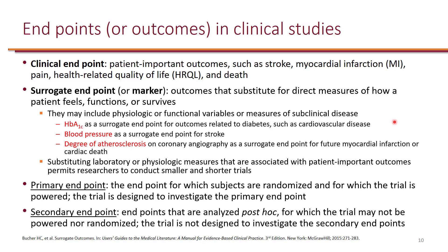They are referred to as secondary endpoints. Although they are looked at, because the study is not designed to measure the secondary endpoints, there's actually risk of bias when measuring these outcomes. So what that really means is that if the study finds something for a secondary endpoint, it's hypothesis-generating.